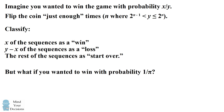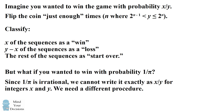But what if you wanted to win a game with probability one divided by pi? Now since one over pi is irrational, we cannot write it exactly as x over y for integers x and y. So this procedure is not going to be easily modified to figure out things where we need an irrational probability. So we're going to use a different procedure.